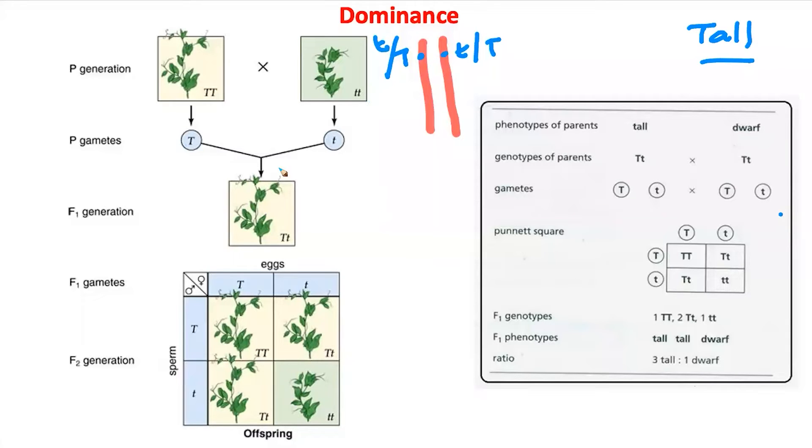When we cross, one of the traits disappeared in the F1 generation. The trait which stayed we call the dominant trait, which is the tall plant. In the F2 generation in a self-cross you end up with a 3 to 1 ratio between tall plants and short plants.